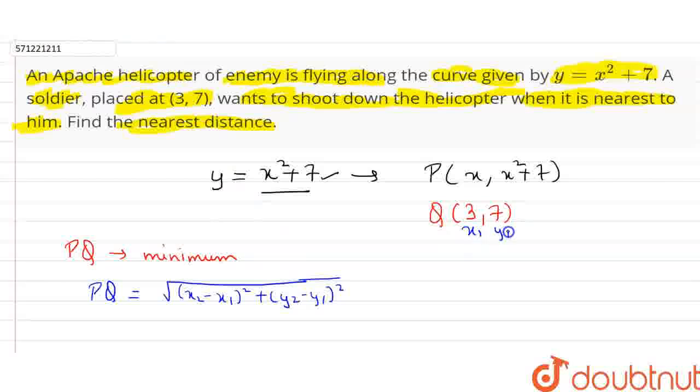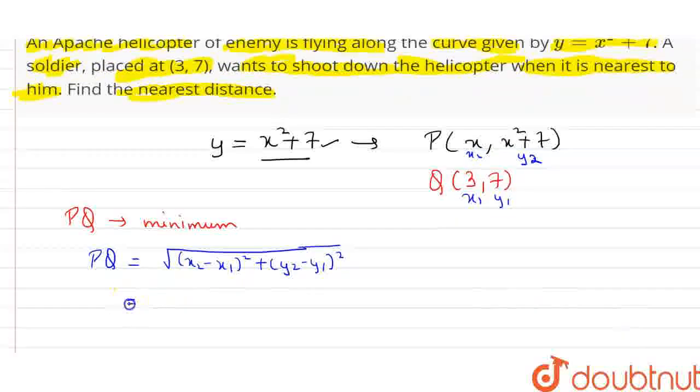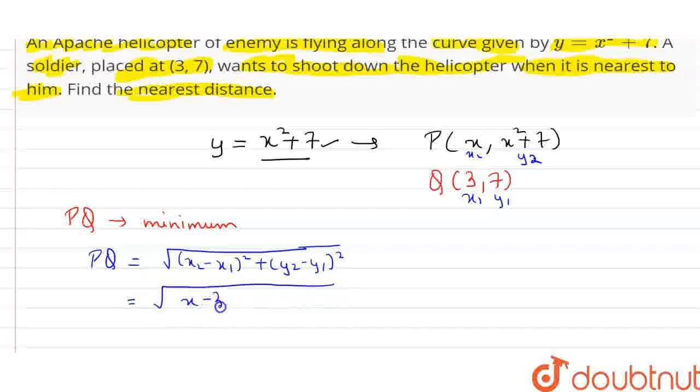Now this is our x1, y1, x2, y2. So let's put in this formula: it is x2 minus x1, x2 is our x, so x minus 3 whole square plus y2 that is x square plus 7 minus y1, y1 is 7 whole square.